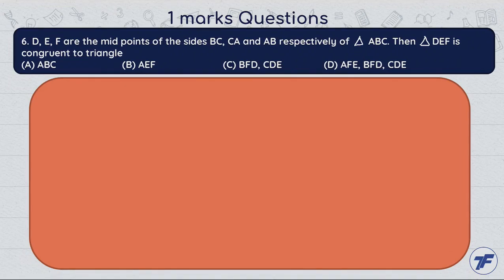Now, the next question, question number 6. DEF are the midpoints of the sides BC, CA and AB respectively of triangle ABC. Then, triangle DEF is congruent to the triangle. There are 4 options.